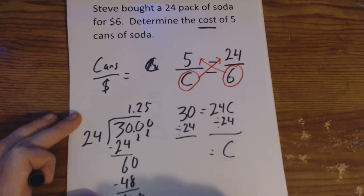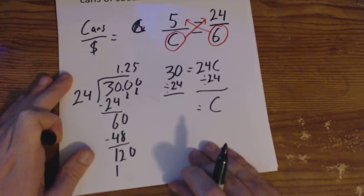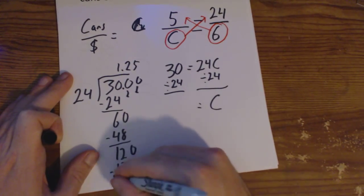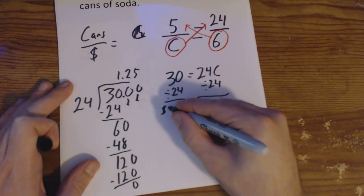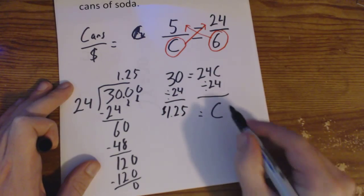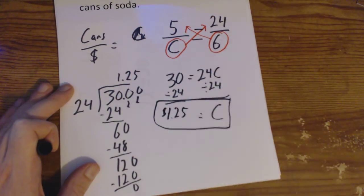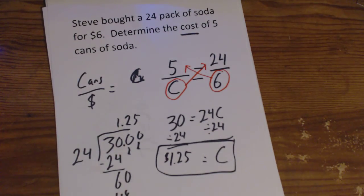5. Our cost, which, let's scoop this up so you guys can see. There's no remainder there. Our cost for five cans of soda would be $1.25. There you go. That's solving proportional relationships.